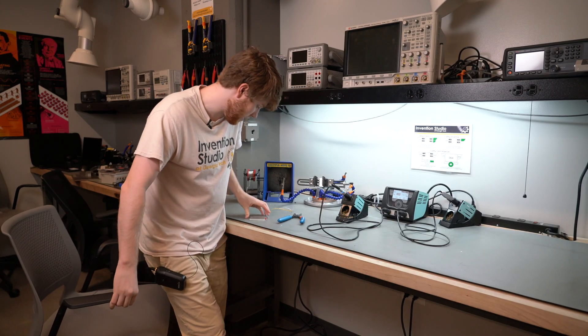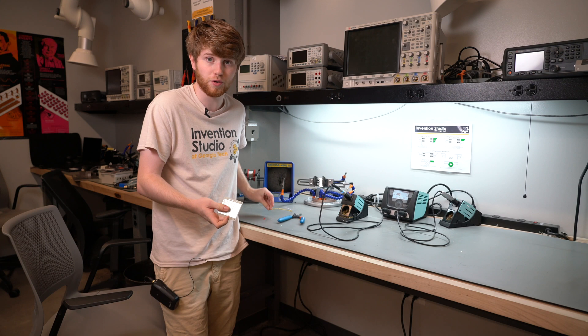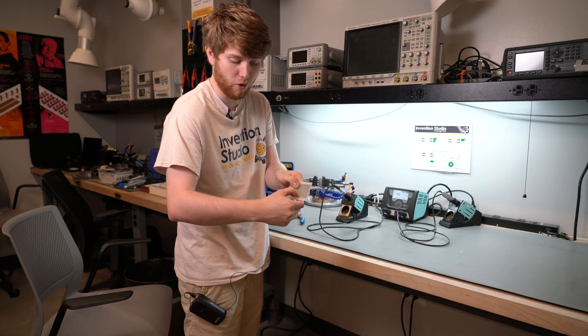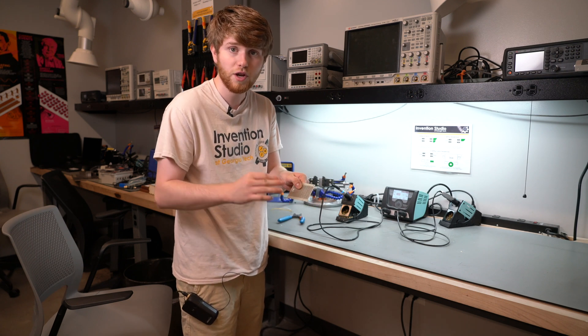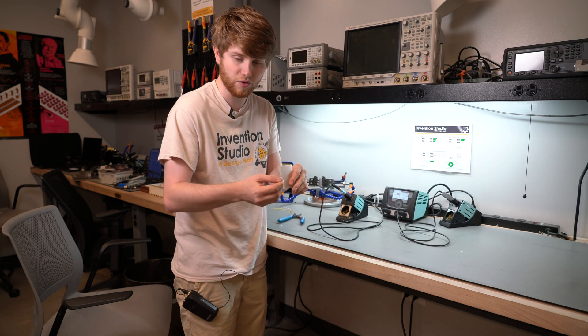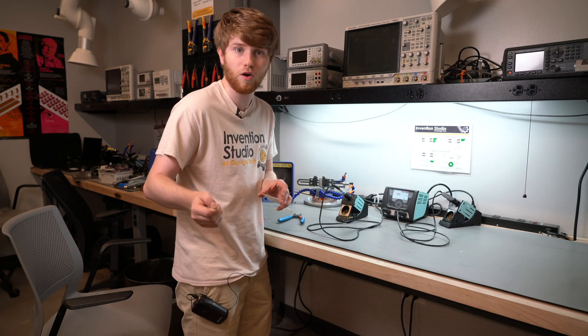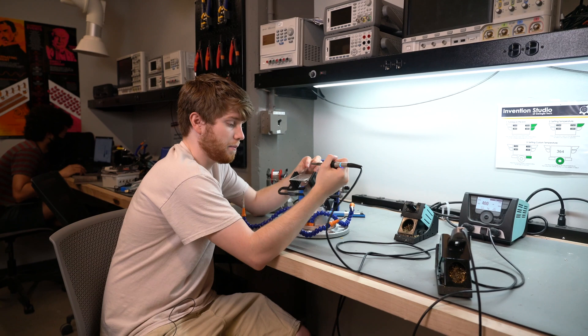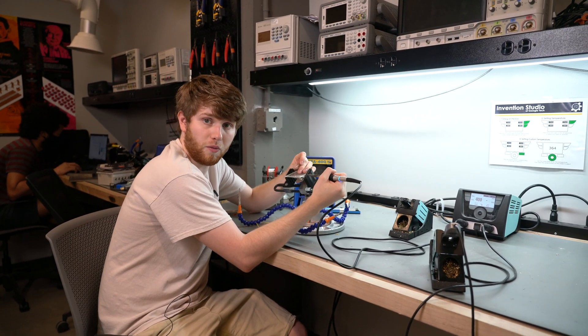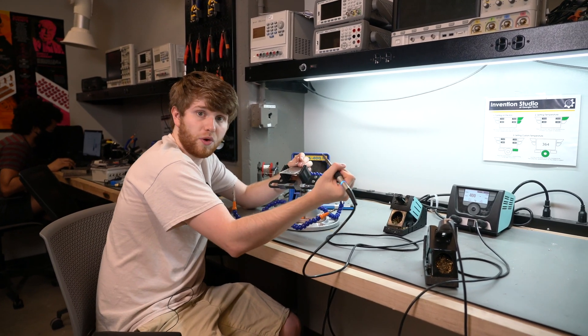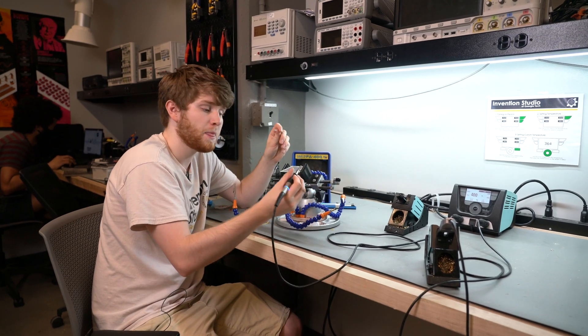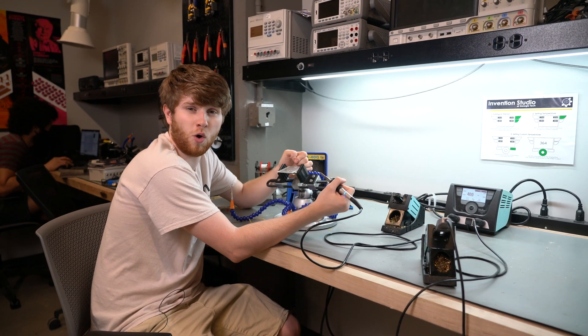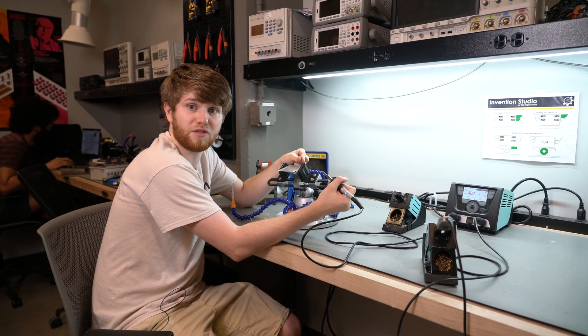The next step is to solder the resistor to your board. Pay close attention to the protoboard you select. Some of them have rails of connected terminals. You want to make sure that when you solder the resistor in, it's bridging two rails that are not already connected. Proper soldering technique involves touching both the component you're trying to solder and the pad on the protoboard you're trying to solder it to with the iron to keep them both hot. Because if both of them are not hot, the solder will only stick to one, and you'll get something called a cold joint, which is bad and will eventually fail.